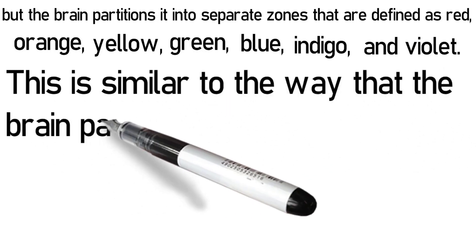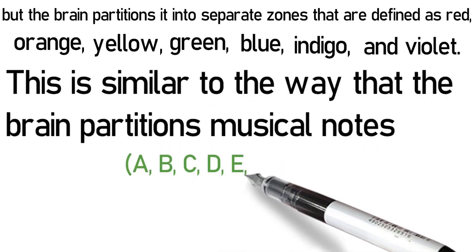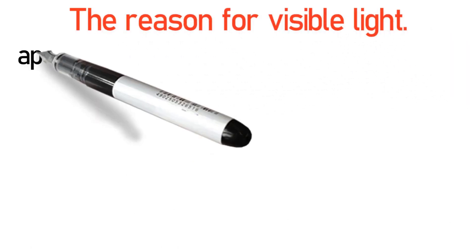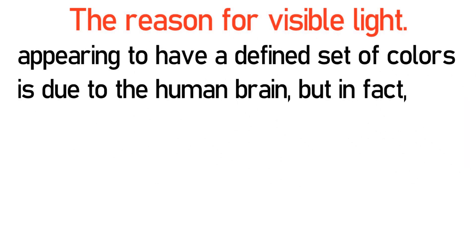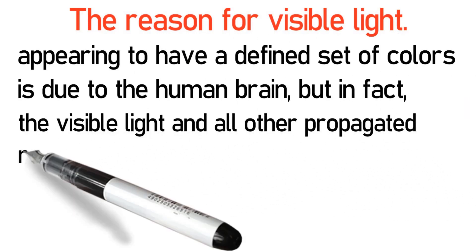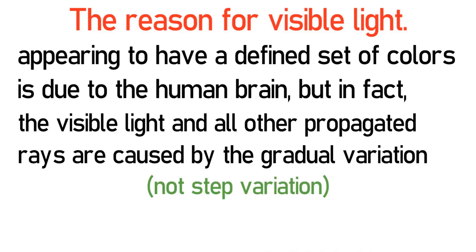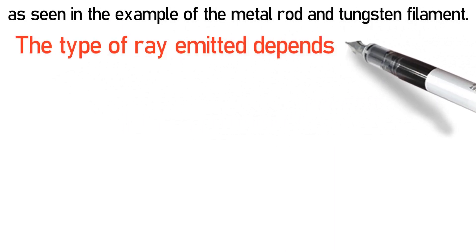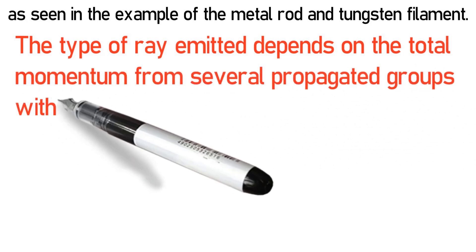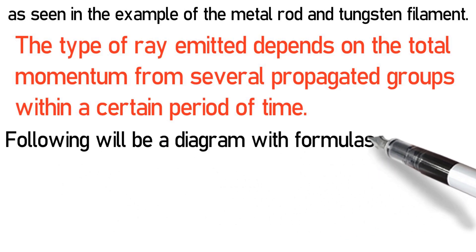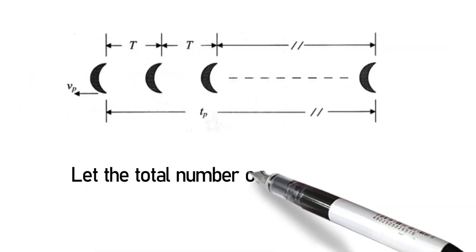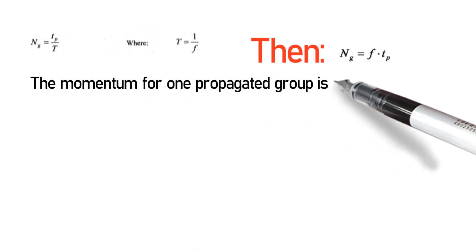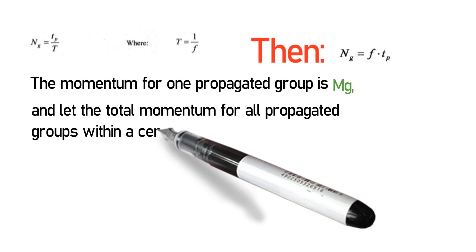This is similar to the way that the brain partitions musical notes A, B, C, D, E, F, and G, even though the eardrum can vibrate with the frequencies in between these whole notes. The reason for visible light appearing to have a defined set of colors is due to the human brain, but in fact the visible light and all other propagated rays are caused by the gradual variation, not step variation, of the momentum from the propagated groups, as seen in the example of the metal rod and tungsten filament. The type of ray emitted depends on the total momentum from several propagated groups within a certain time period. Let the total number of propagated groups within a certain time frame, Tp, be Ng, the momentum for one propagated group be Mg, and the total momentum for all propagated groups within Tp be Mp.